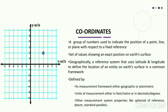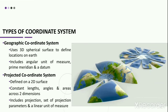Each coordinate system is defined by its measurement framework — either geographic, in which spherical coordinates are measured from the center of the earth, or planimetric, in which the earth's coordinates are projected onto a two-dimensional planar surface. It can also be defined by units of measurement in feet, meters, decimal degrees, or by other system properties such as a spheroid for reference, a datum, one or more standard parallels, a central meridian, and a possible shift in the x or y axis. There are two common types of coordinate system used in GIS: a geographic coordinate system and a projected coordinate system.